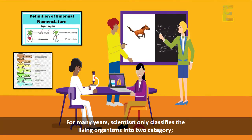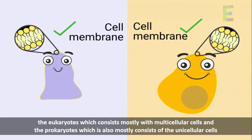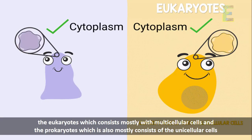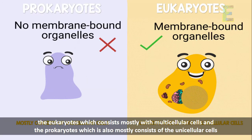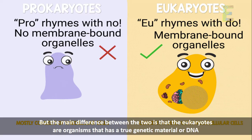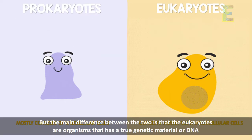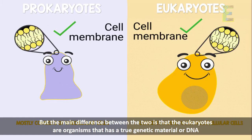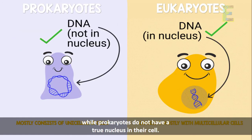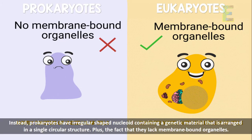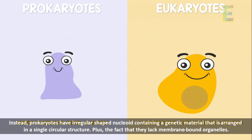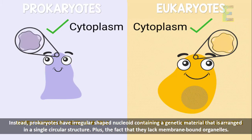For many years, scientists only classified living organisms into two categories: the eukaryotes, which consist mostly of multicellular cells, and the prokaryotes, which mostly consist of unicellular cells. The main difference between the two is that eukaryotes are organisms that have a true genetic material, or DNA, while prokaryotes do not have a true nucleus in their cell. Instead, prokaryotes have a regular-shaped nucleoid containing genetic material arranged in a single cellular structure, plus the fact that they lack membrane-bound organelles.